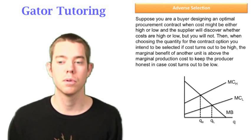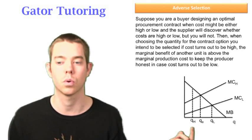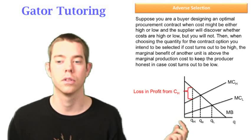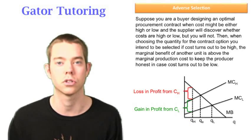We would think that we would do the same for the high cost job and produce this efficient quantity, but instead we restricted quantity to equate the loss in profit from the high cost job to the gain in profit from the low cost job.